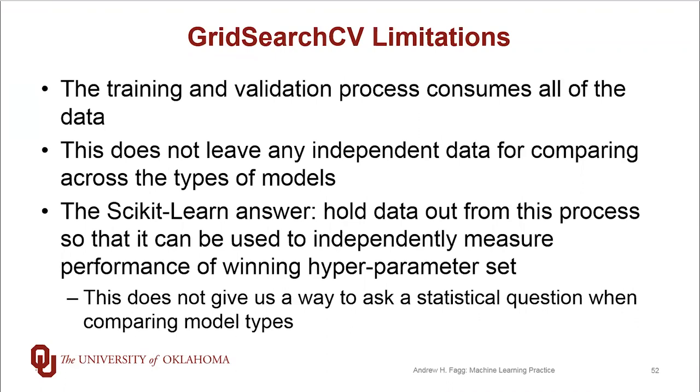The problem with this, at least at the surface level, is it doesn't give us a way to ask a clean statistical question when we go to compare one type of model to another type of model, as we only have one test dataset and we will only get one performance metric out of that. So next step, what we're going to do is a quick example of using GridSearchCV in Python, but now we're ready to take the step into building a more holistic cross-validation type of an approach.